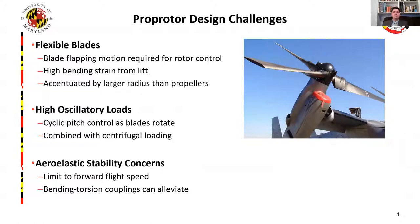However, that doesn't come without its own set of challenges. As mentioned earlier, the blades are flexible. This is a requirement for rotor control, and so they are under high bending strain from the lift, accentuated by having a larger radius than propellers. Due to the cyclic pitch controls, the blades undergo high oscillatory loading, not to mention the combined centrifugal loading from rotating at such high speeds. Ultimately, this leads to aeroelastic stability concerns.